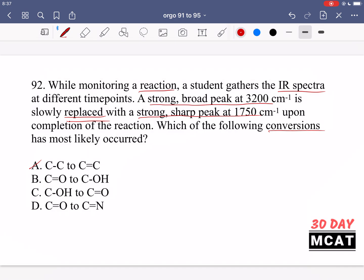It's not option A. It's difficult to look at these C-C bonds and double bonds. It would be around 1600 but it wouldn't be a strong sharp peak at 1750. In option D we don't really talk about C=N, that's not something you need to know for the MCAT. So it's between B and C.